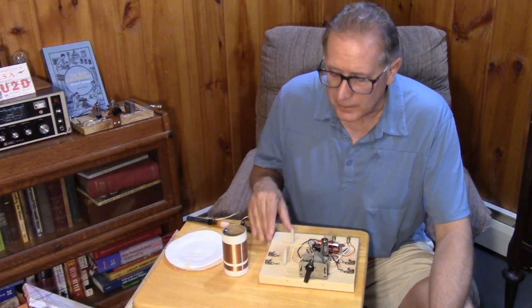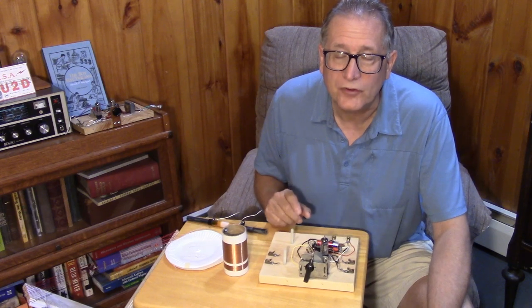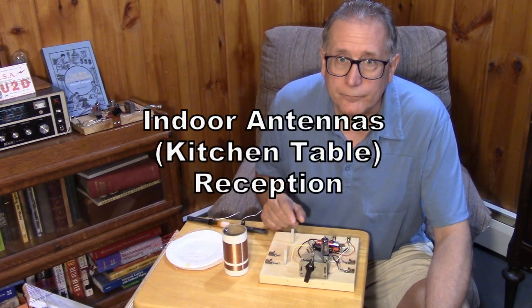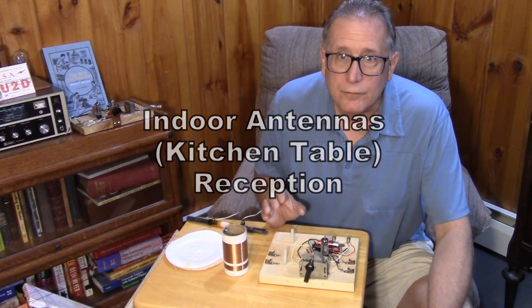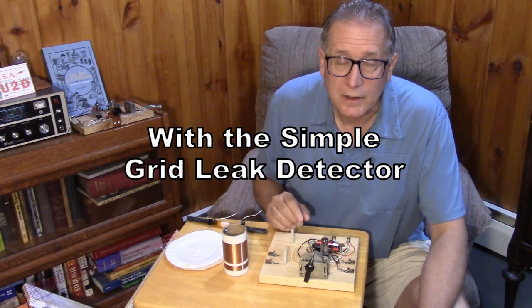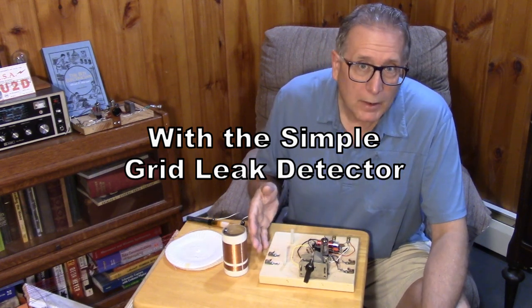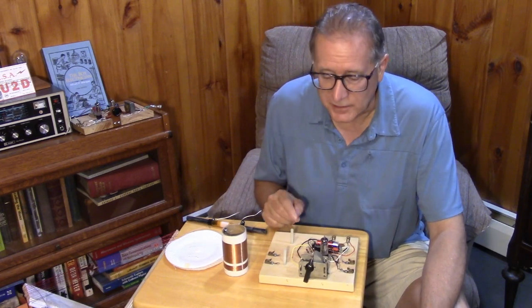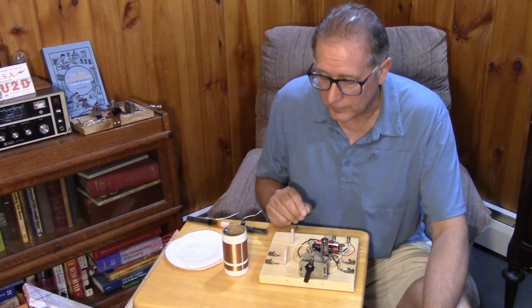In the last video, we had our grid leak detector, our little one-tube receiver, hooked up to a 75-foot antenna. A 75-foot antenna works quite well with an antenna tuner, and even without an antenna tuner I could pick up probably four or five local stations and at night many stations on the grid leak detector.